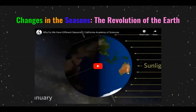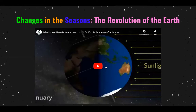Let's watch one last video for this section. Changes in the seasons — what's responsible for that? It's the revolution of the Earth, whereas the rotation of the Earth on the spot is what causes the day and night cycle.